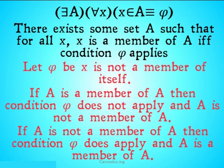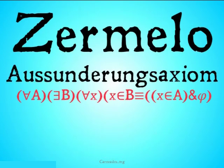Zermelo-Frankel are going to solve this problem by getting rid of the naive comprehension principle and replacing it with something that I cannot pronounce. This is going to be Zermelo... I'm not even going to try. ZA is what it's referred to. That's what I'm going to refer to it as. I believe it means the separation axiom in German, but don't quote me on that. It is: for all A, there exists a B such that for all X, X is a member of B if and only if X is a member of A and condition φ applies.